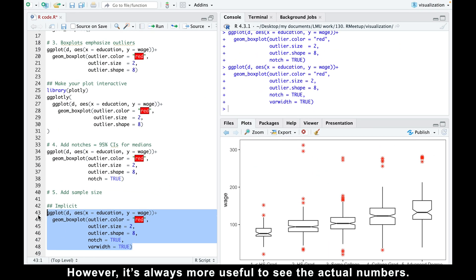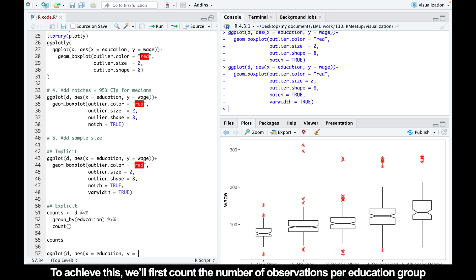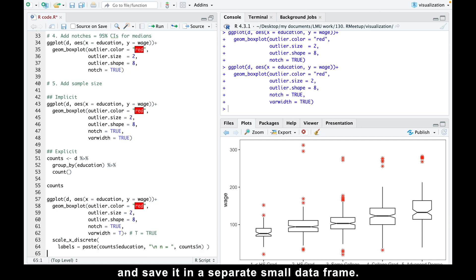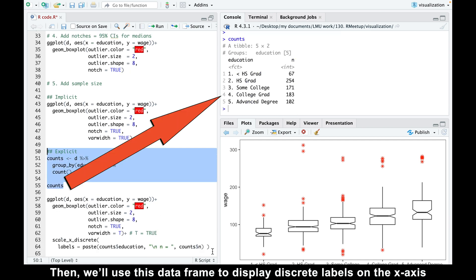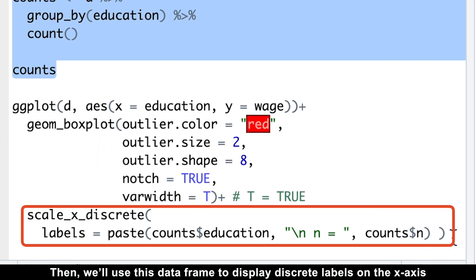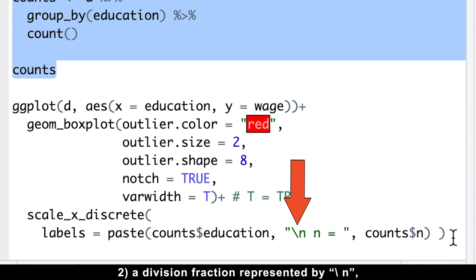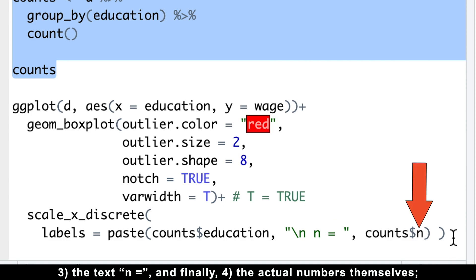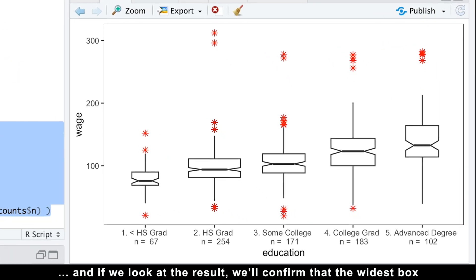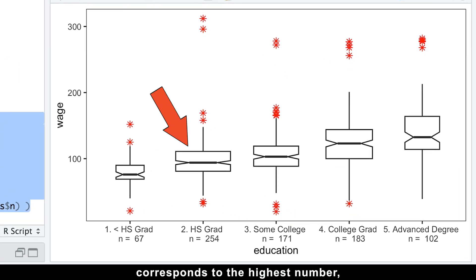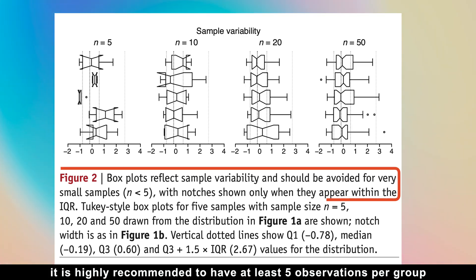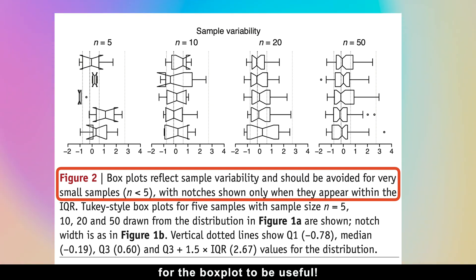However, it's always more useful to see the actual numbers. To achieve this, we'll first count the number of observations per education group, and save it in a separate small data frame. Then, we'll use this data frame to display discrete labels on the x-axis below every boxplot, including the name of the education group, a division fraction represented by backslash n, the text n equal, and finally, the actual numbers themselves. And if we look at the result, we'll confirm that the widest box corresponds to the highest number, while the narrowest box represents the lowest number. Here's an important detail. It is highly recommended to have at least five observations per group for the boxplot to be useful.